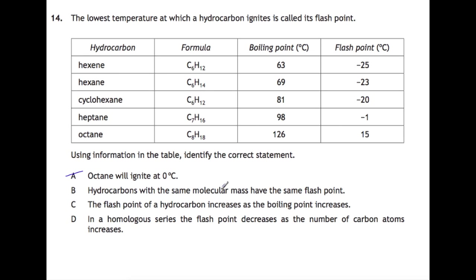Hydrocarbons with the same molecular mass have the same flashpoint. So here you need to look for two that have the same formula. So we'd be looking at hexane and cyclohexane and then comparing their flashpoints and you can see that they are different. The flashpoint of a hydrocarbon increases as the boiling point increases. So if we have a look at hexane, heptane and octane where we have the boiling point increasing and you can see that the flashpoint does also increase. So C is our answer.